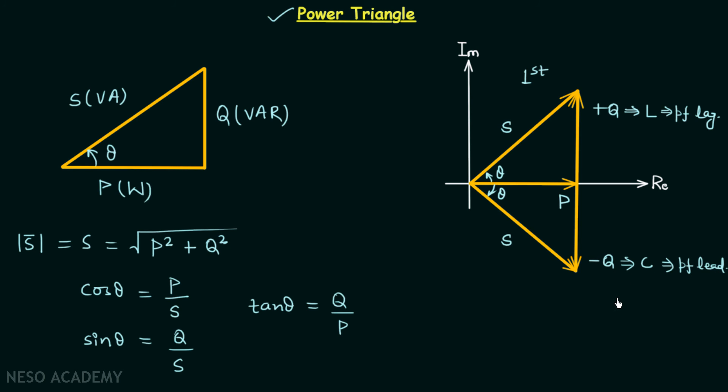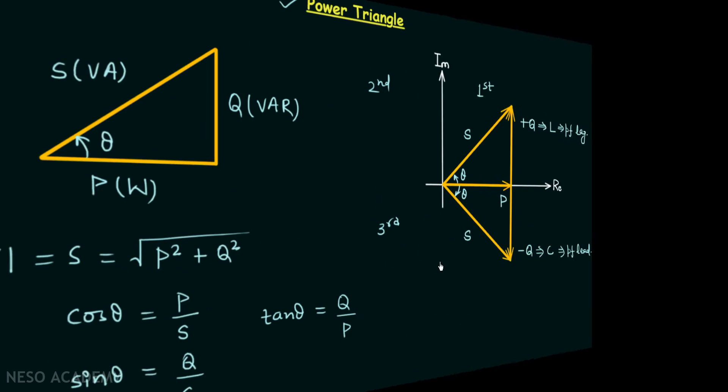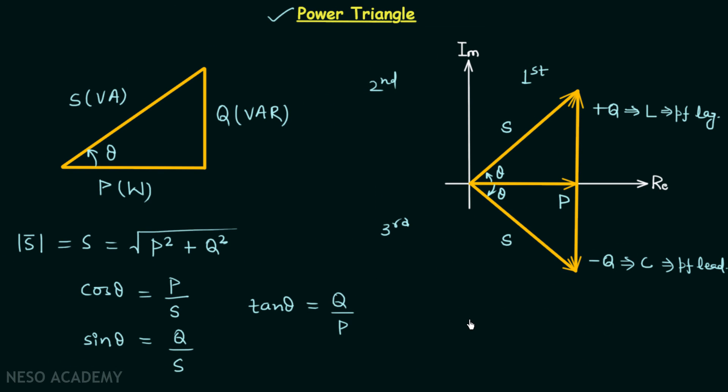These two points are very important. And the apparent power can also lie in the second and the third quadrant but when it happens the real power will be negative and this means we should have negative load resistance. And this is only possible when we have active circuits. So remember all these points. I will end this lecture here, see you in the next one.